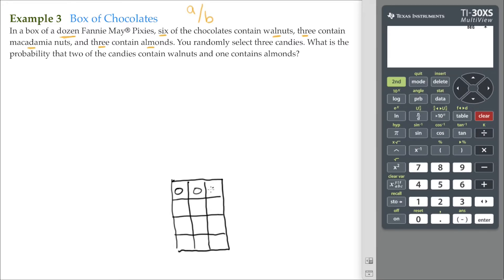Here is my box of candies. There they are sitting in there, all these Fannie Mae Pixies with all these different varieties of nuts in them. There's 12 candies here. You're going to select or choose three of them.